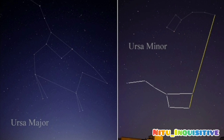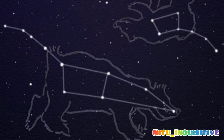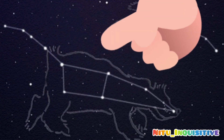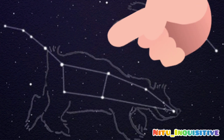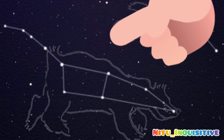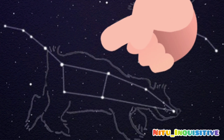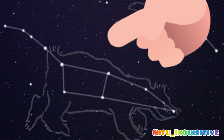In Ursa Major constellation, there are seven stars and it is also known as Great Bear. We call it the Great Bear because its stars are arranged in such a way that they seem to form the outline of the Big Bear or the Great Bear.